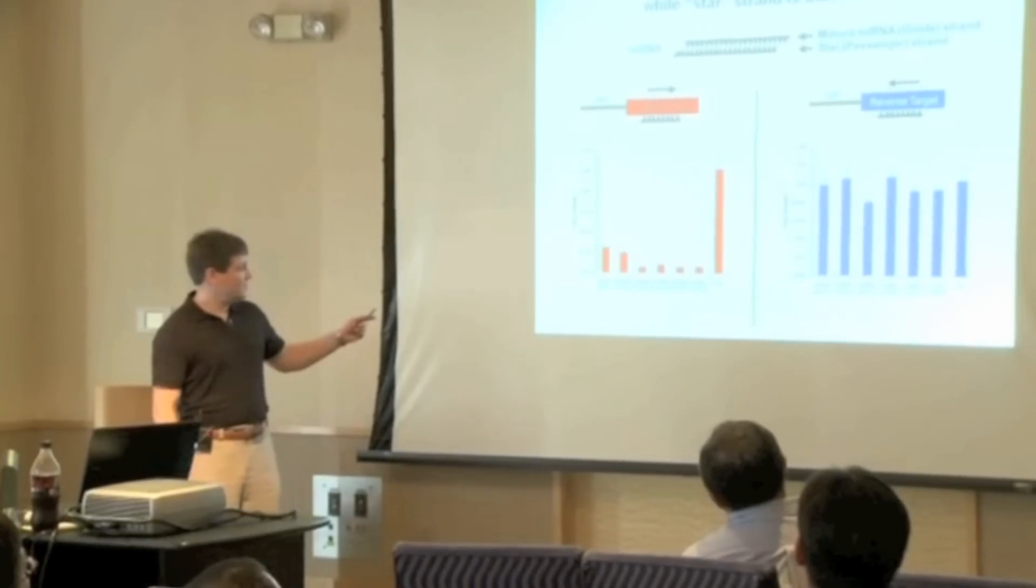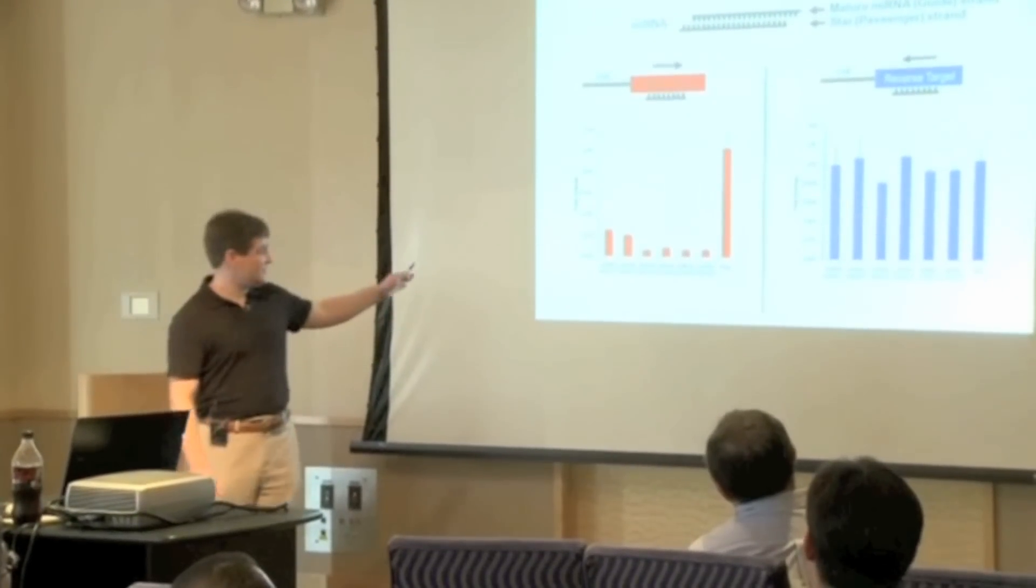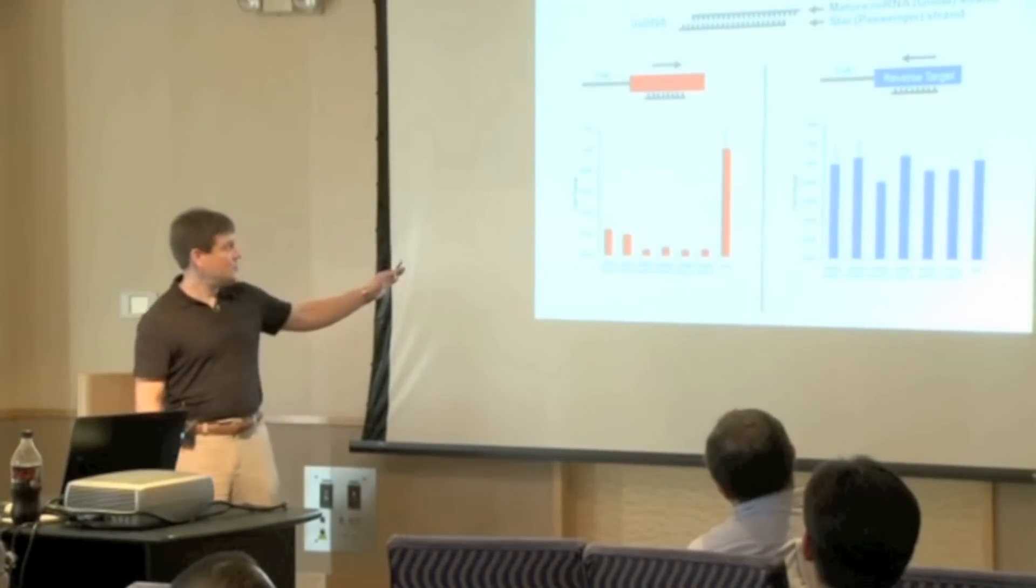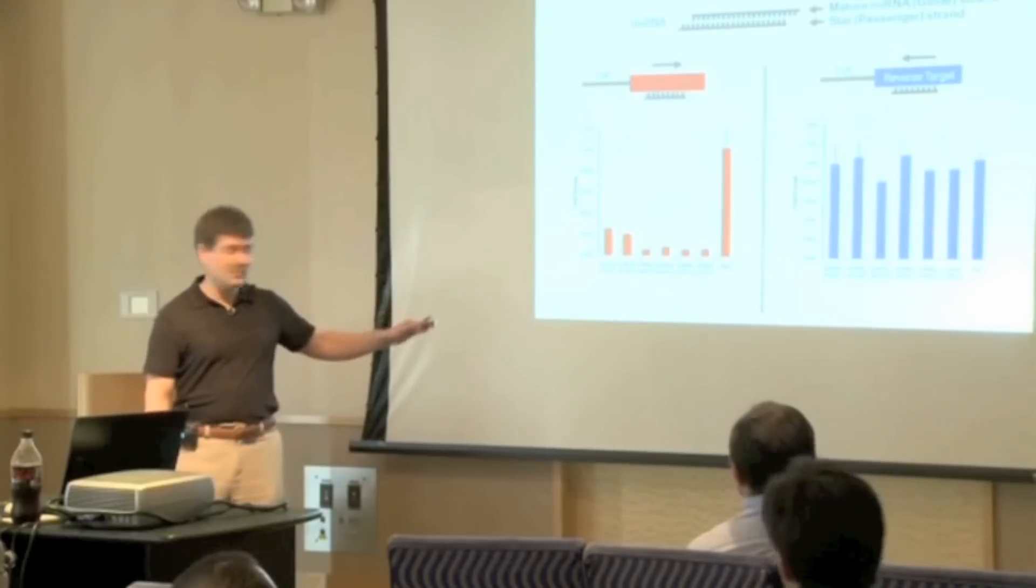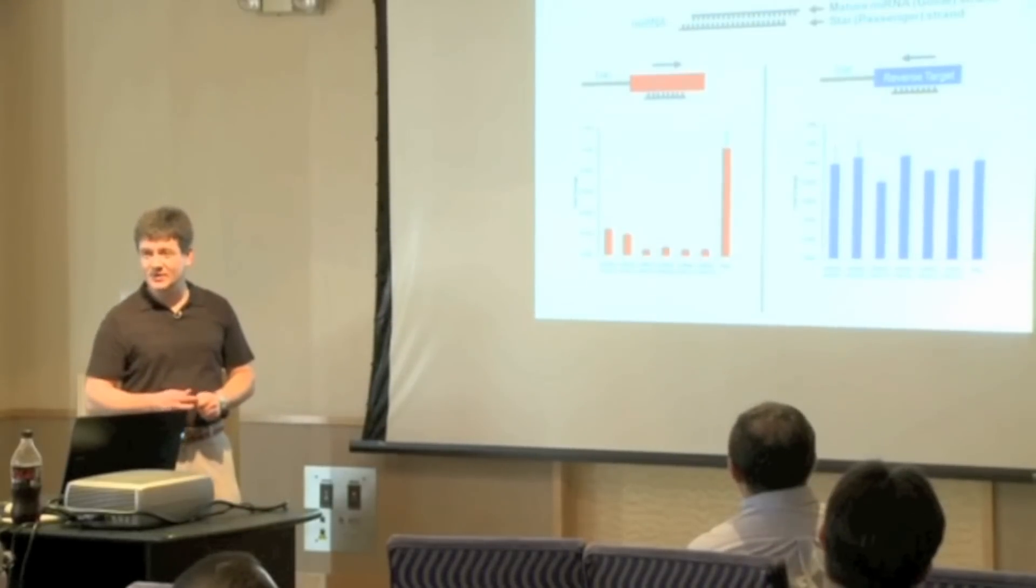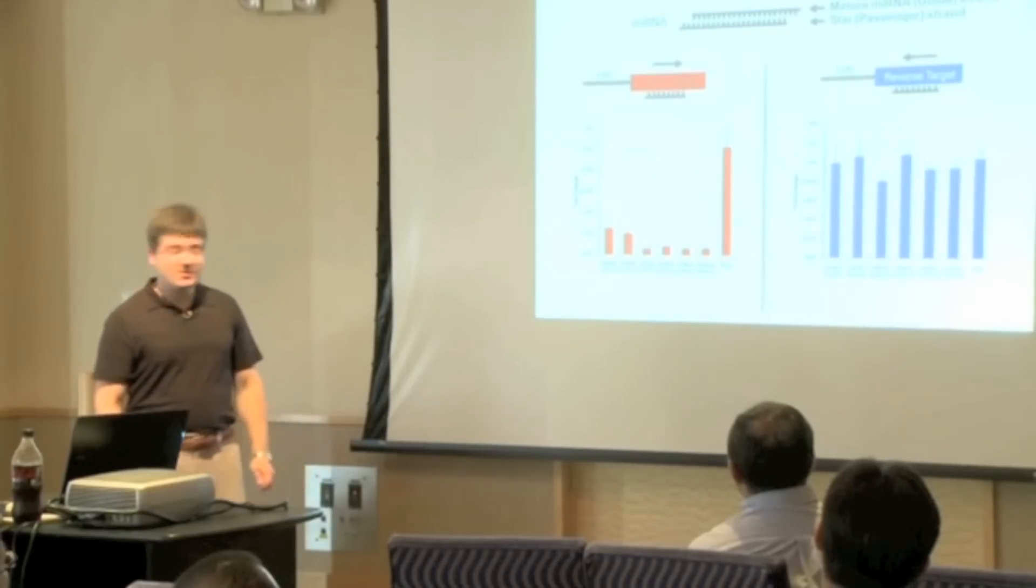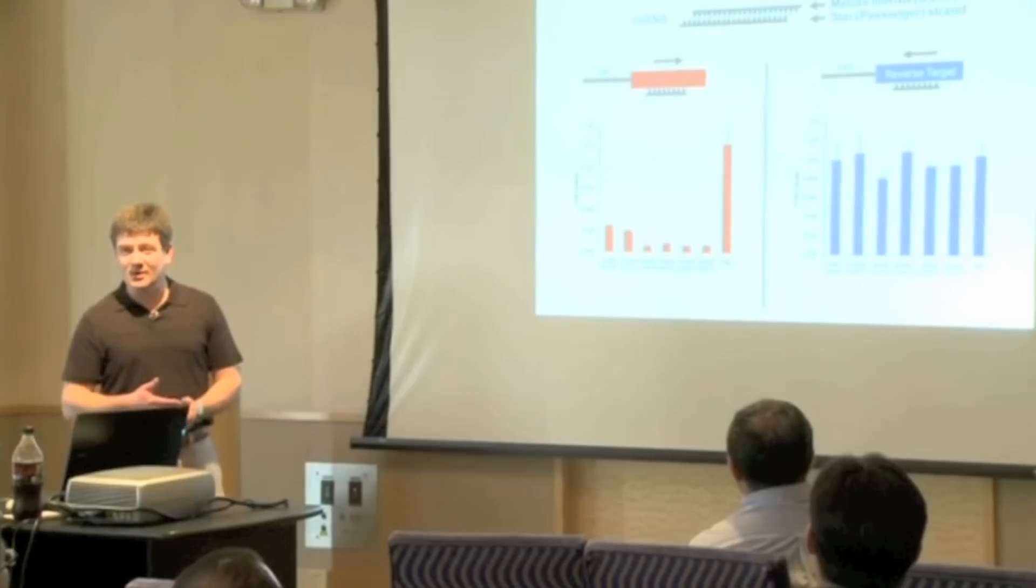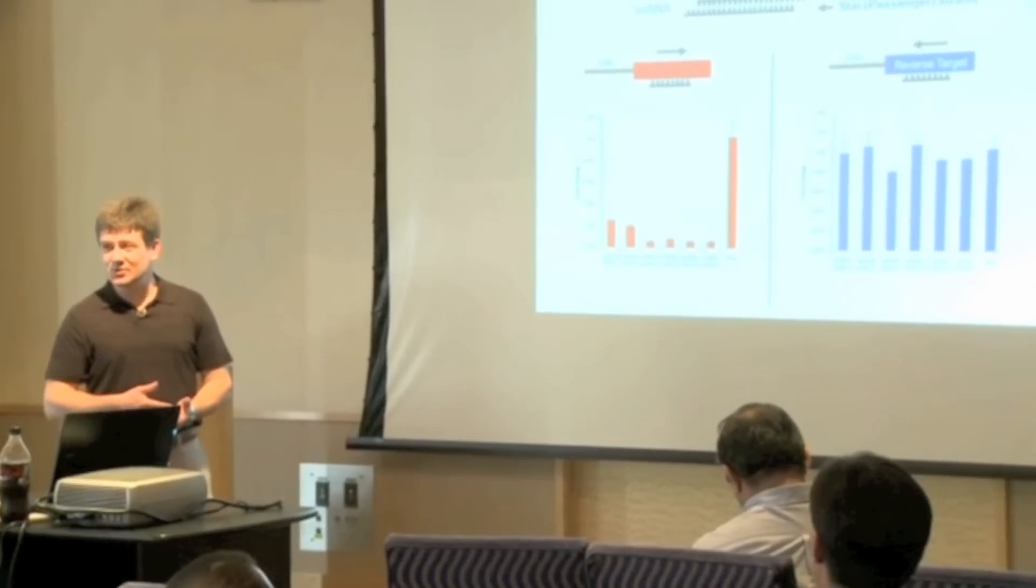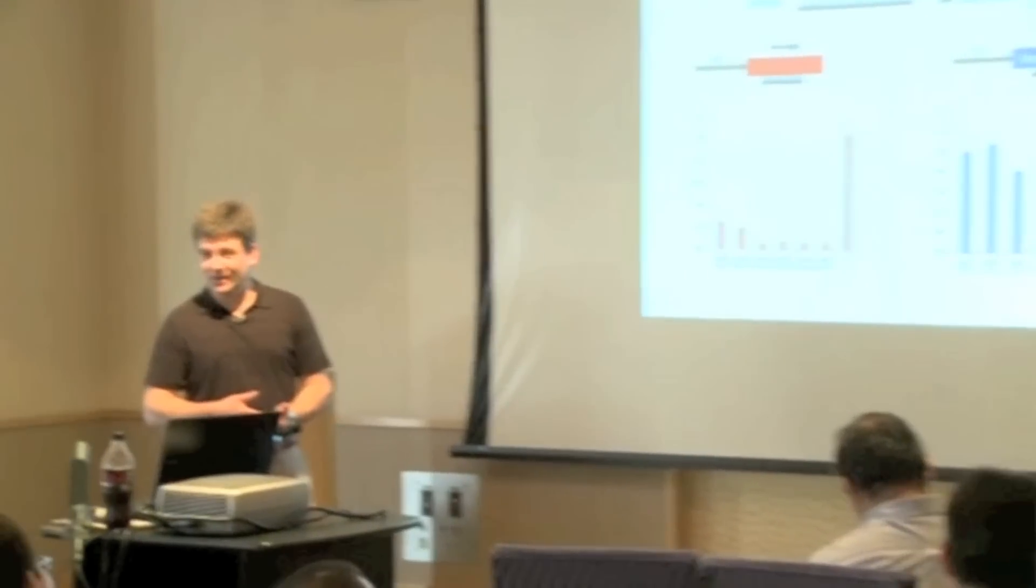We did this for six different constructs. As you can see on the left, the mature guide strand was extremely efficient compared to negative control. We routinely achieved 80 to 90 percent downregulation. On the right, the reverse target was not active at all, indicating that our chemical modifications introduced into the mimics worked very well, resulting in complete abolition of passenger strand activity.